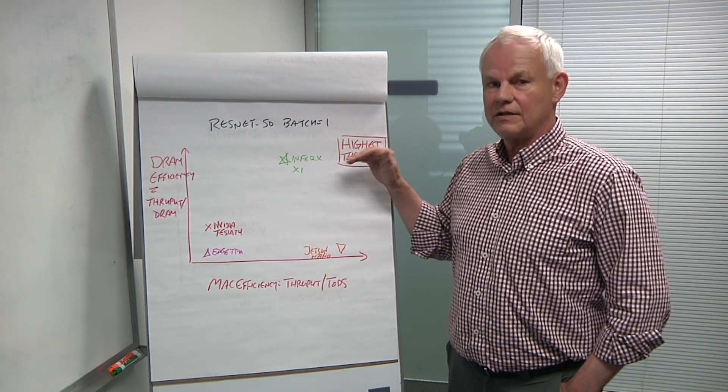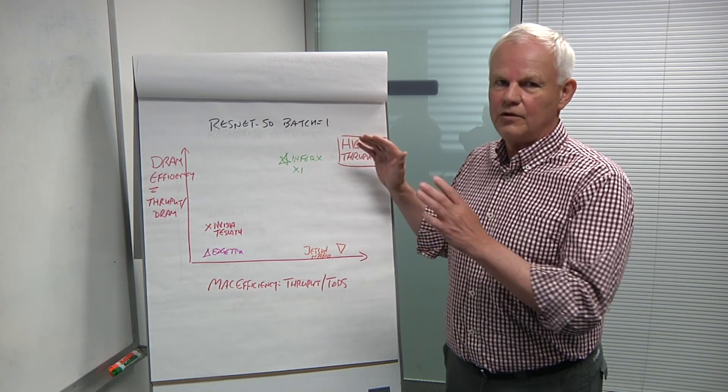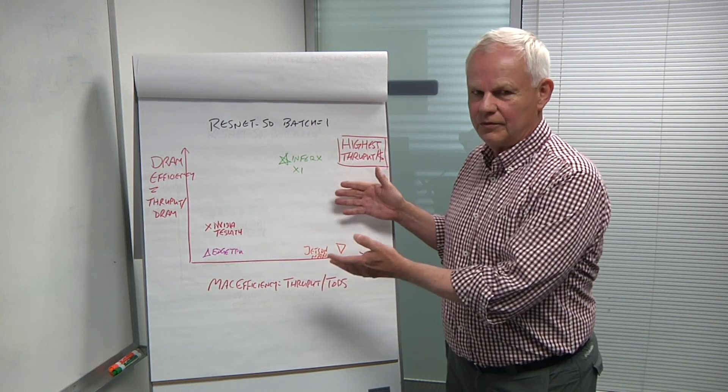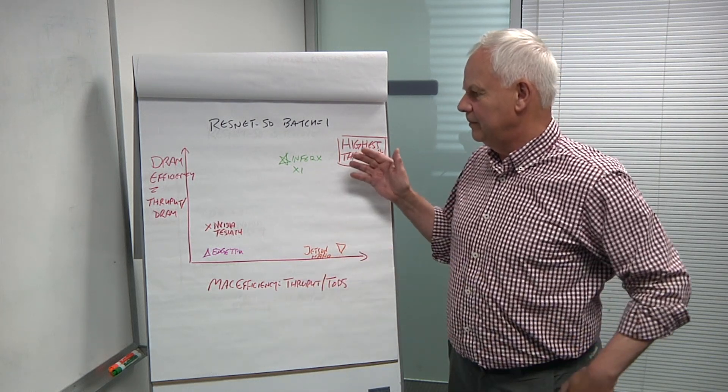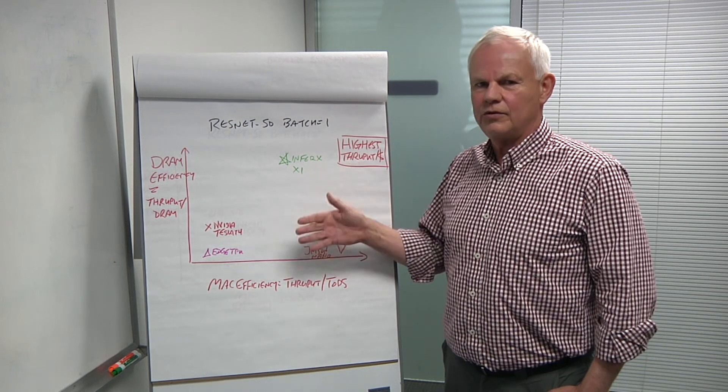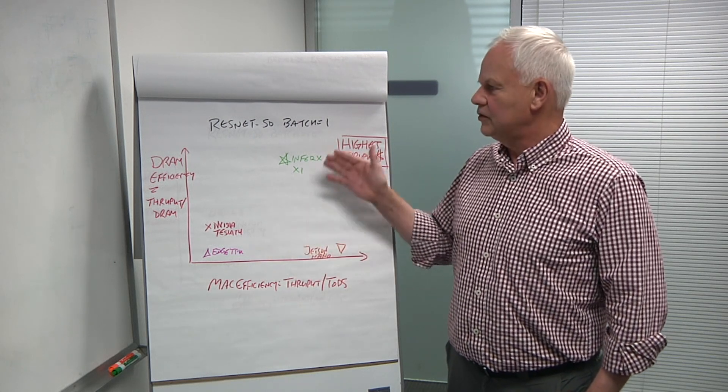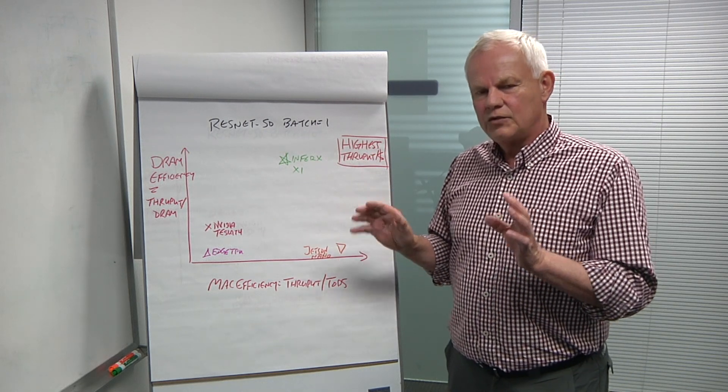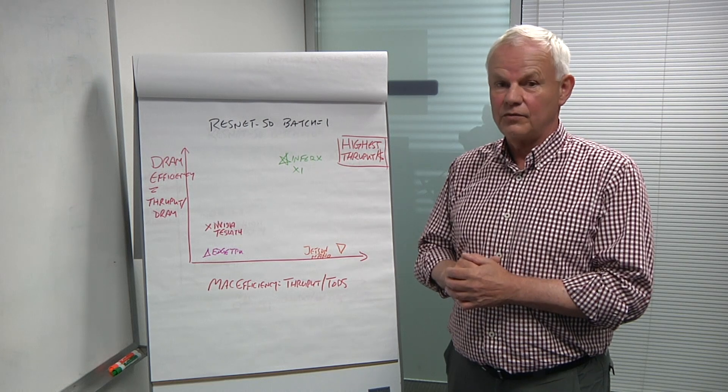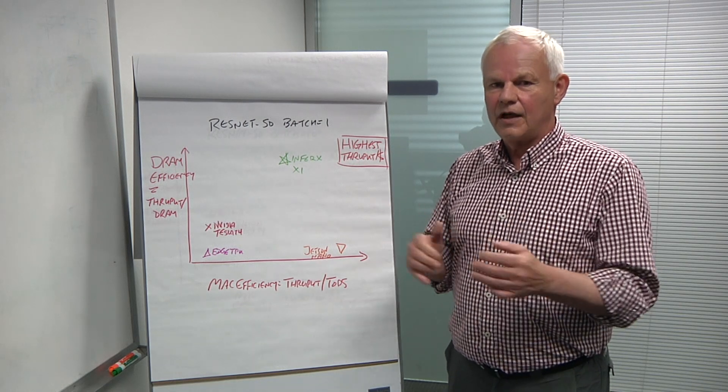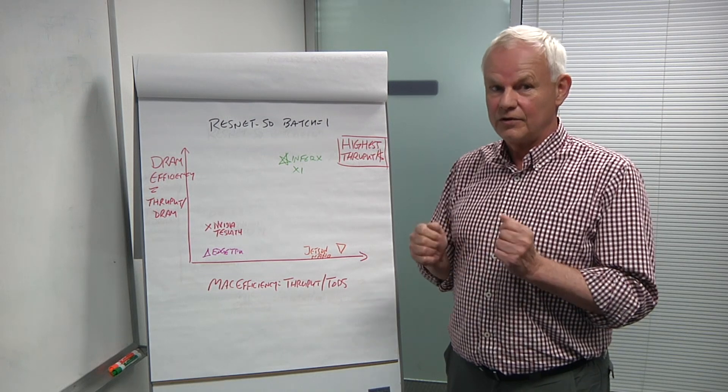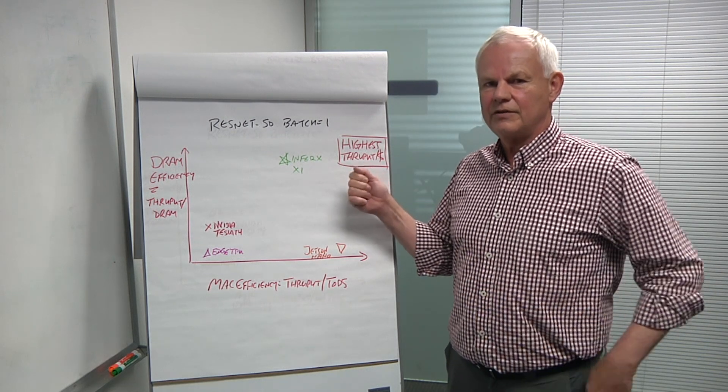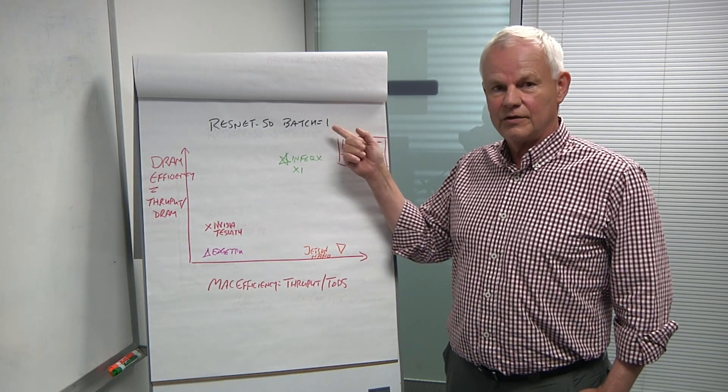If you have all that throughput, does that necessarily mean that you can utilize it? Well, throughput is utilization. Let's be careful. Nobody that we've met wants to do ResNet-50. We're using ResNet-50 here as a rough indicator of overall throughput. ResNet-50 is not a good indicator, but it's better than TOPS. What you really want to do is ask your vendors to give you this information for the benchmark that you care about.